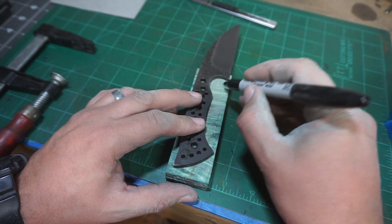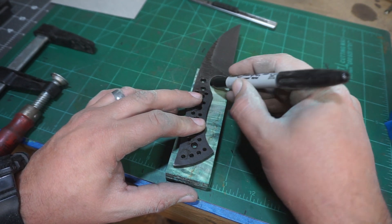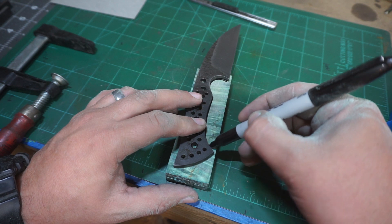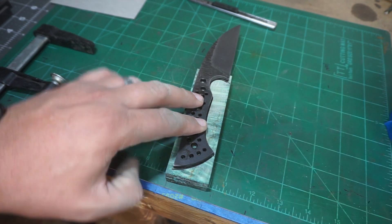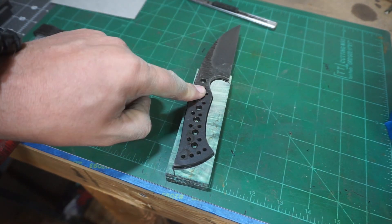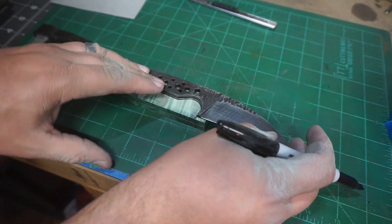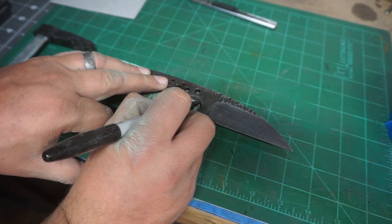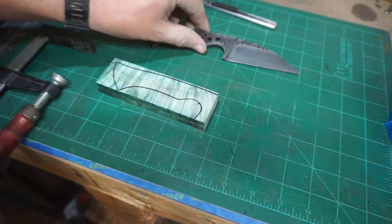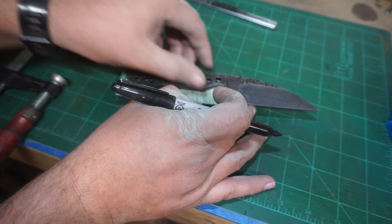Once we got the scales nice and flattened, I want to go ahead and draw the outline of the tang on the scales. The whole point behind this is so that as we're drilling holes and adjusting things, we have a reference for where the knife is supposed to be.